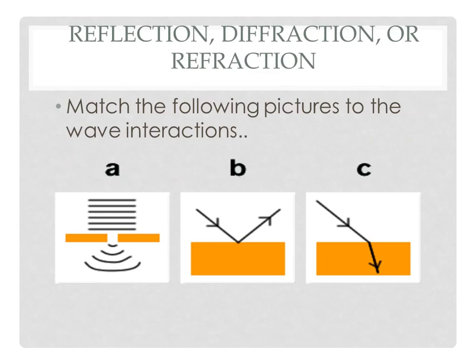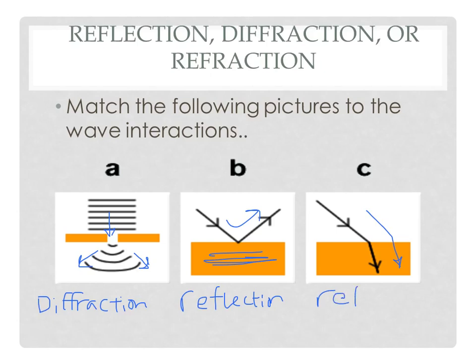So take a second and decide which ones you think it'll be. If you want to pause, that might be a good idea. And I'll go ahead and write down what I put and we'll talk about it. Hopefully you matched up A with diffraction, because as the waves enter the barrier they start to spread out as they pass through that little opening. B, you should have matched that up with reflection, because here we have a medium that can't be passed through, so the wave ends up bouncing back. Finally C, we have a different medium that the wave goes into, so we have a bend. This is called refraction.